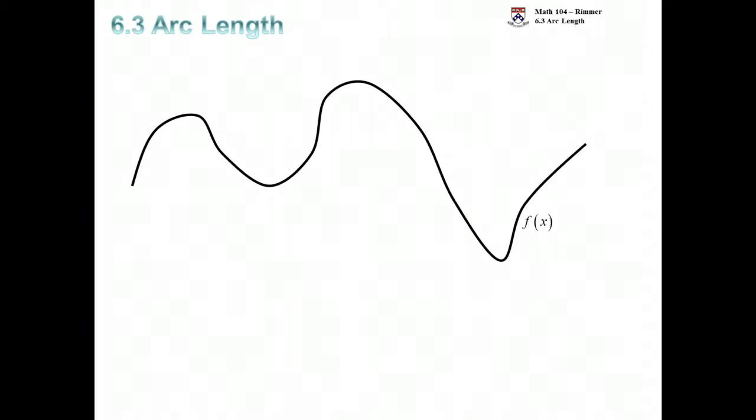Here's a generic graph of a function called f of x. And let's say there's some interval from some a to b. We'd like to know how long it would be if we were to travel along the graph of the function.